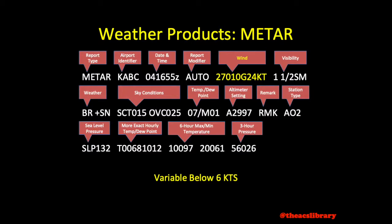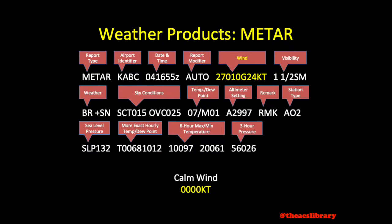Variable winds below 6 knots — for example 3 knots — are reported as VRB at 03 knots. Winds above 6 knots and varying more than 60 degrees would be coded as heading 270, 10-knot winds varying 240 to 300. Calm wind is coded as quadruple zero knots.